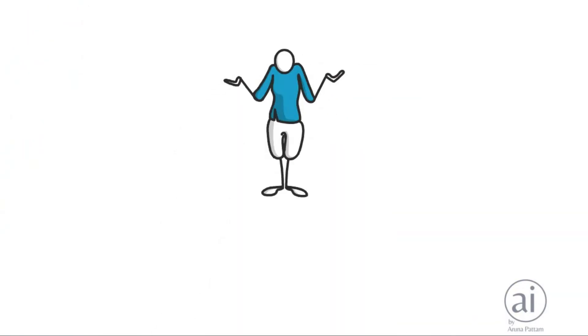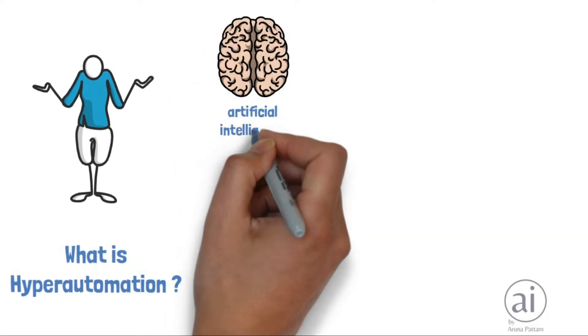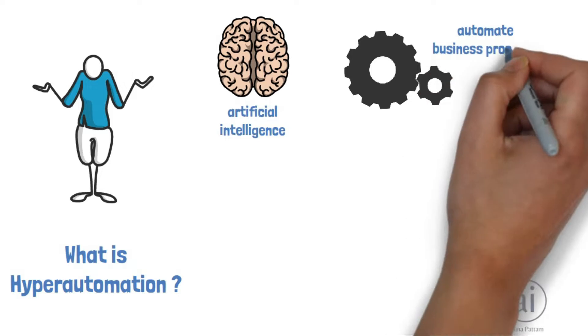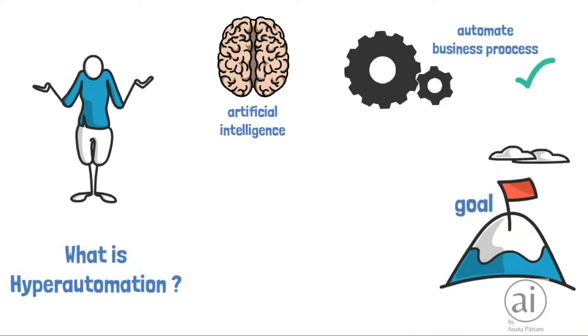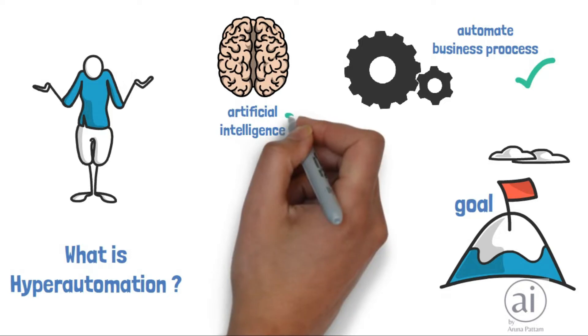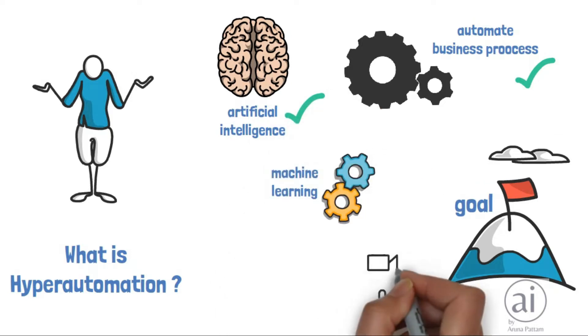What is hyper-automation? It is the application of artificial intelligence to automate business processes. The goal of hyper-automation is to automate as much work as possible using AI technologies such as machine learning, natural language processing and so on.